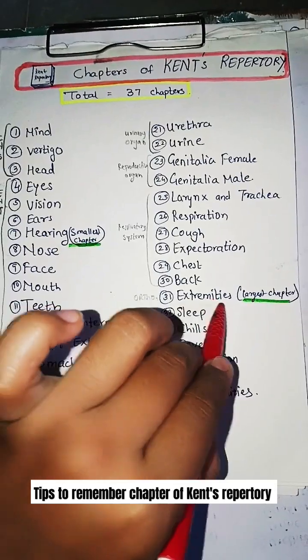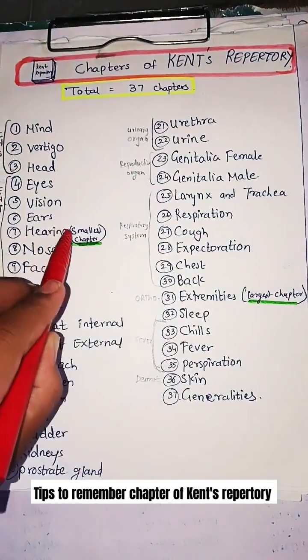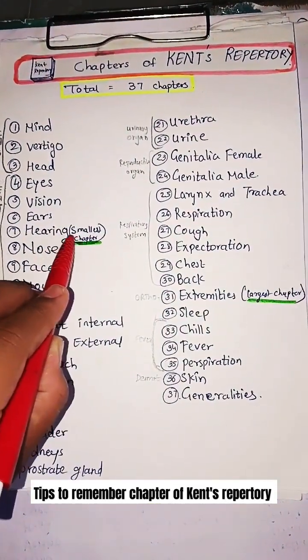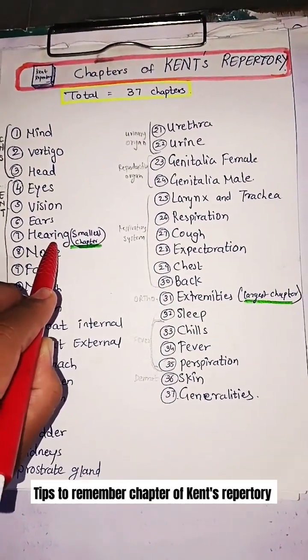The largest chapter in Kent's Repertory is Extremities, and the smallest chapter is Hearing. This is all about Kent's Repertory.